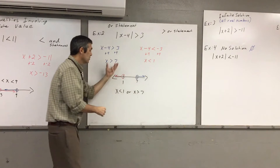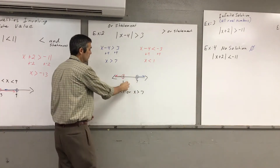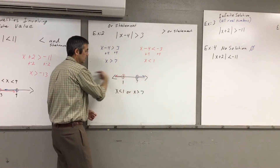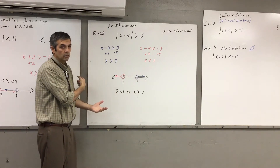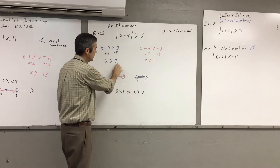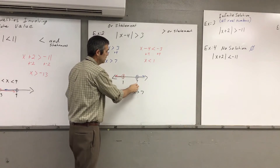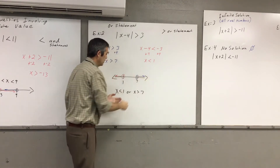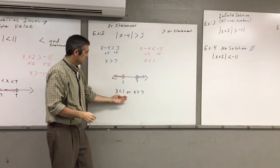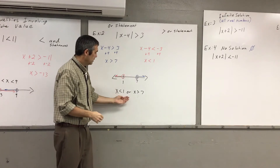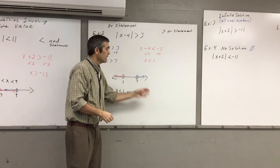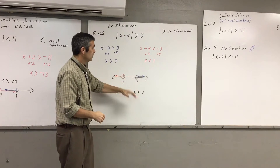Then I graphed it. x is less than 1: open circle at 1, going to the left — doesn't include 1, no line underneath it. x is greater than 7: open circle at 7, going to the right. I have an 'or' statement: x is less than 1 or x is greater than 7. It gives you that nice flow to it — you're going to have to split these up in order to see it.